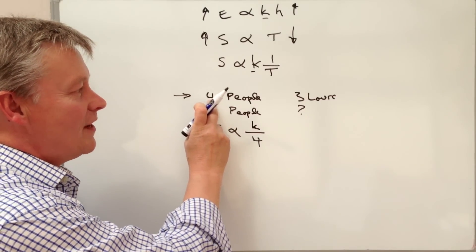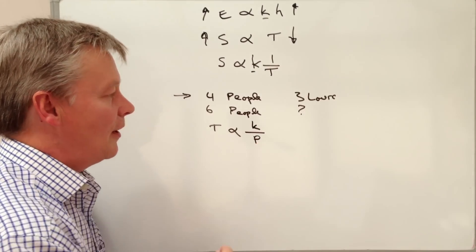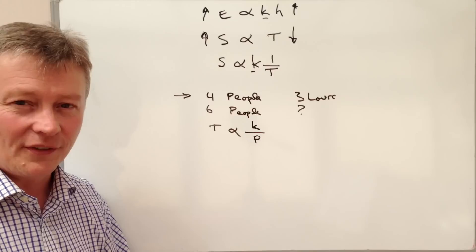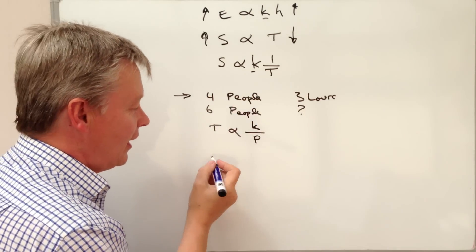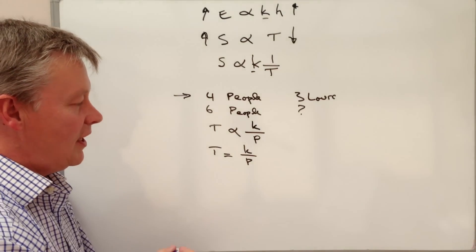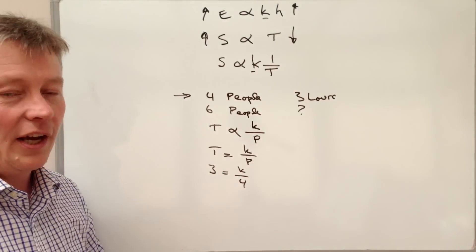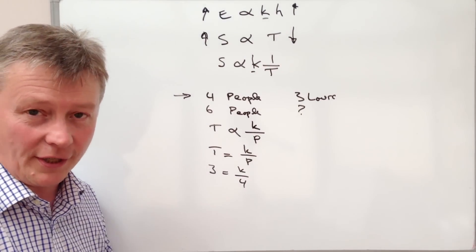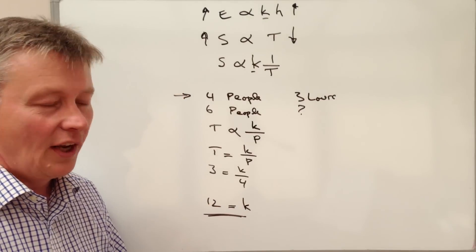So what we need to do using this information, the 4 people in the 3 hours, is work out this value of K. I'm just going to make that P actually. So let's put the numbers in. At this particular moment, the 4 people in 3 hours, then T equals K divided by P. So 3 hours equals K over 4. And if you use a little bit of algebra to manipulate that, you can work out that by multiplying both sides by 4, the value of K equals 12.